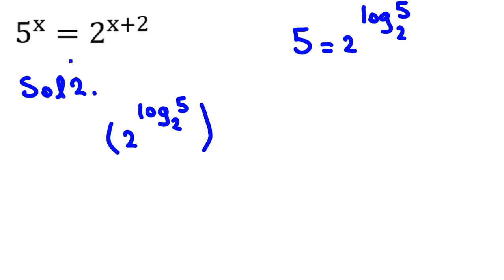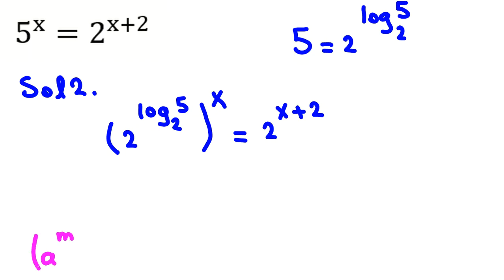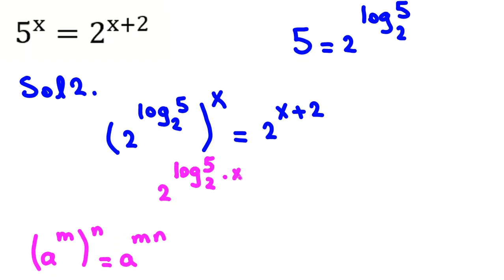So the left side becomes (2 to the power of log base 2 of 5) to the power of x, equal to 2 to the x plus 2. Using the power rule — a to the m, all to the n, equals a to the m times n — the left side becomes 2 to the power of (log base 2 of 5 times x), equal to 2 to the x plus 2.